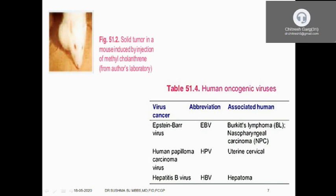Human oncogenic viruses include Epstein-Barr virus, human papillomavirus, and hepatitis B virus, which accounts for hepatoma. Human papillomavirus accounts for cervical cancer and uterine cancer. The HPV vaccine is given to adult women to prevent future uterine or cervical cancer. Epstein-Barr virus directly causes Burkitt's lymphoma and nasopharyngeal carcinoma, which we will study in detail in pathology.